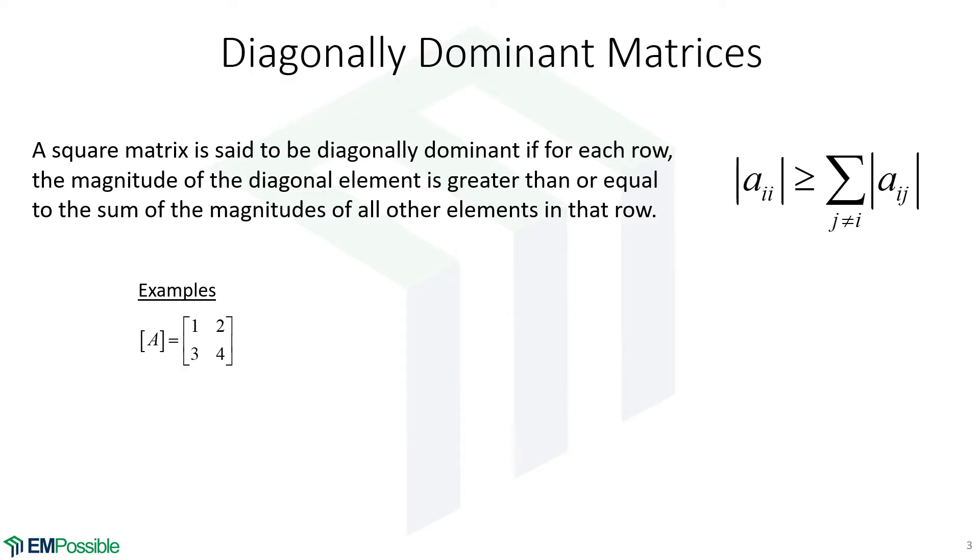So to take this home, let's look at some examples. Here's a matrix, one, two, three, four. Is that a diagonally dominant matrix? The answer is no. And that's simply because in the first row, our diagonal element one is actually less than two. So that's not diagonally dominant.